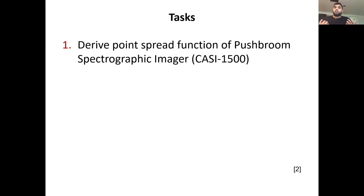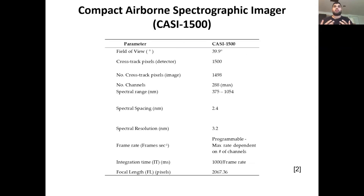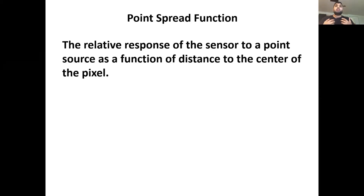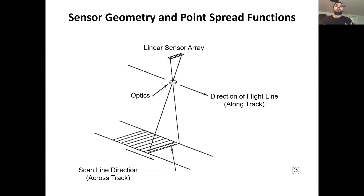This brings us to the objective: to characterize and mitigate sensor-generated spatial correlations in airborne hyperspectral imaging data, using simple tools that are approachable for all end users to bridge the gap between sensor manufacturers and the vast majority of end users. The first thing we want to do is really understand what goes into a pixel. In this study, we're going to use the CASI 1500 as an example. To understand what a pixel is, we have to talk about the point spread function, which is formally defined as the relative response of a sensor to a point source as a function of distance to the center of the pixel.